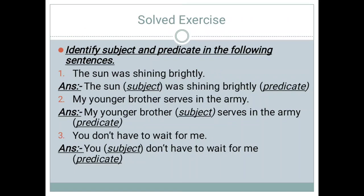Now moving towards the solved exercise. First exercise: identify the subject and predicate in the following sentences. In the first sentence: the sun was shining brightly. Our subject will be the sun, and was shining brightly will be our predicate.